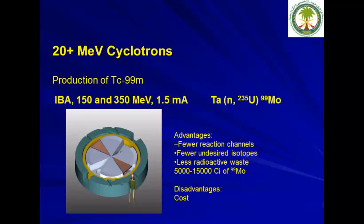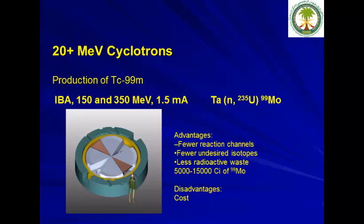IBA has also proposed using 150 and 350 MeV cyclotrons with 1.5 microamp current to produce Moly-99 from enriched uranium using neutrons. However, the cost is very high and this approach is not considered feasible at the present time.